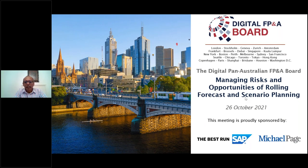Good morning, good afternoon, good evening, ladies and gentlemen, and welcome to this Digital Pan-Australian FP&A Board. Today we're going to be talking about managing risks and opportunities of rolling forecast and scenario planning. My name is Hans Gobin. I am an ambassador with FP&A Trends Board, and I'll be facilitating this meeting today. Joining us today, we've got over 450 attendees from 37 countries, but mostly Australia and New Zealand.